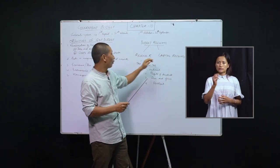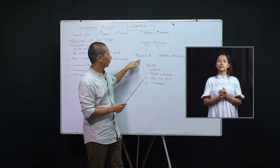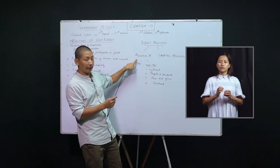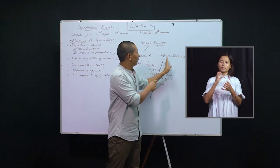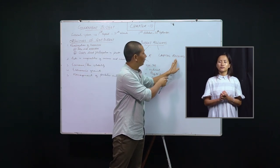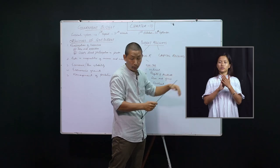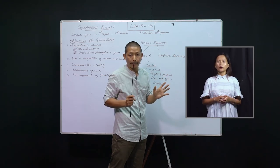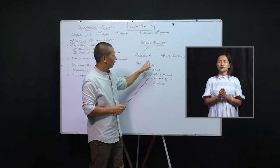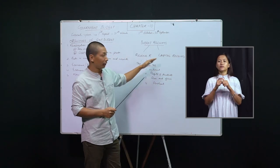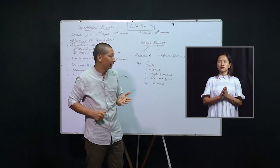So revenue receipts and capital receipts are just opposites. Revenue receipts do not lead to creation of any liability and do not lead to reduction in assets. Capital receipts lead to creation of liability and lead to loss of government assets. Budget receipts is divided into revenue receipts and capital receipts, and revenue receipts is further divided into tax and non-tax, which we will explain in the next session.